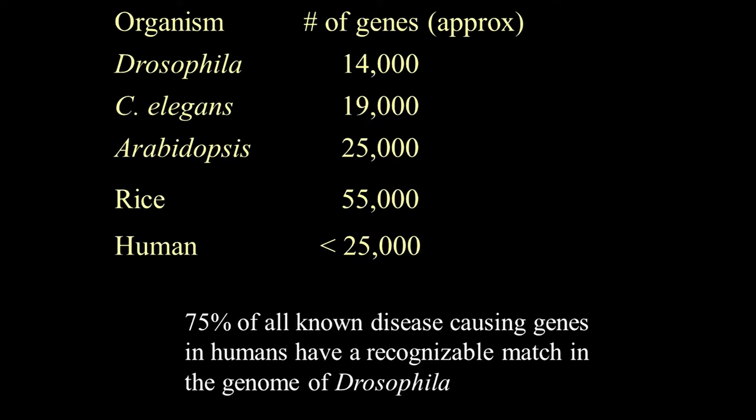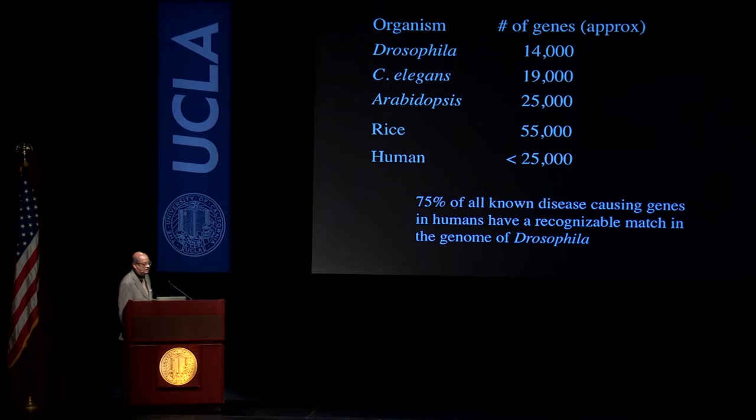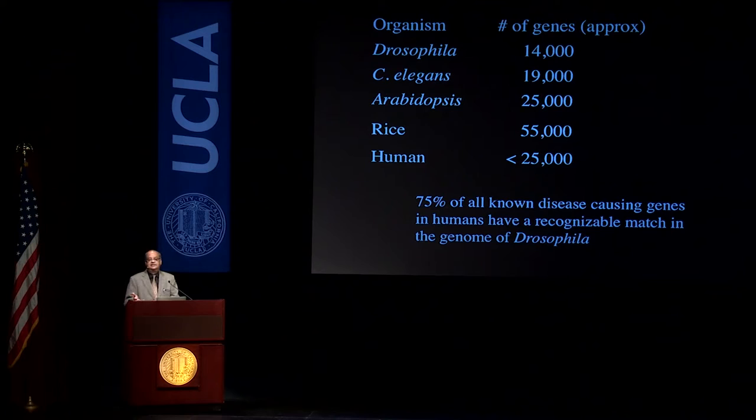One of the reasons is that the number of genes that define us and the number that define the fruit fly are not very different — probably closer to 20,000. In fact, rice, which is not very intelligent at all, has 55,000 genes. So we have the same number of tools, which kind of makes sense.